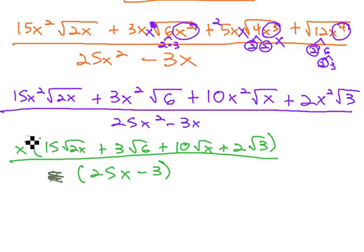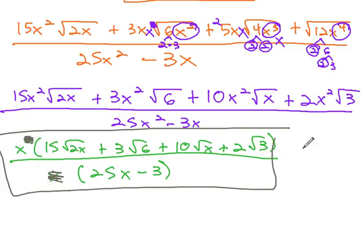That lets 1 over x divide out, and we get our final answer. x times that huge, ugly polynomial over 25x minus 3, the hardest problem solved.